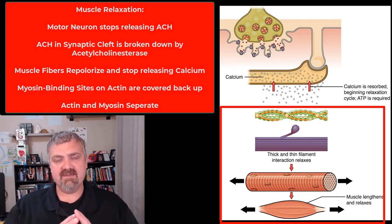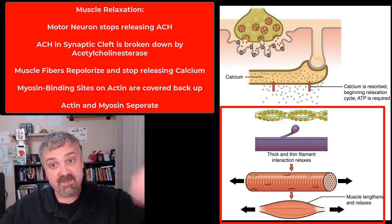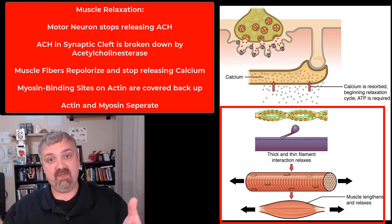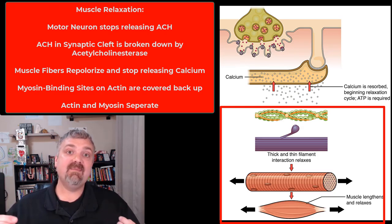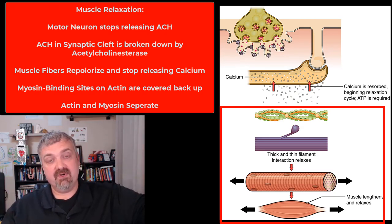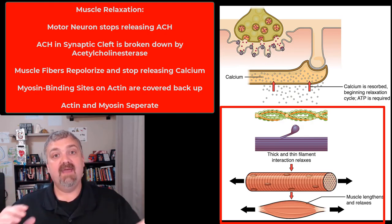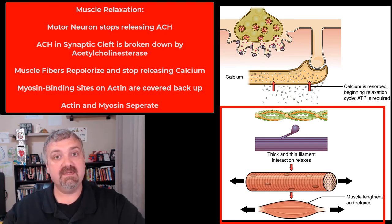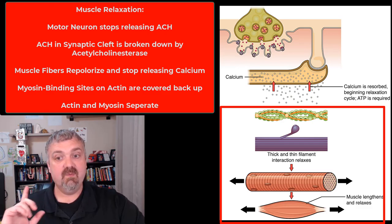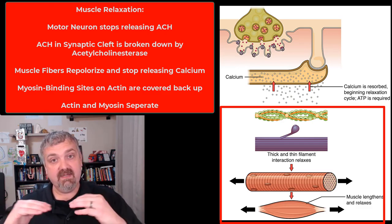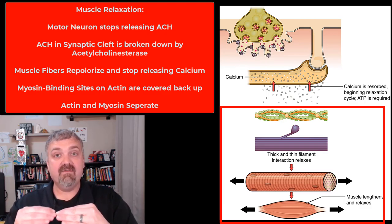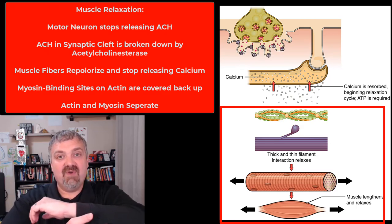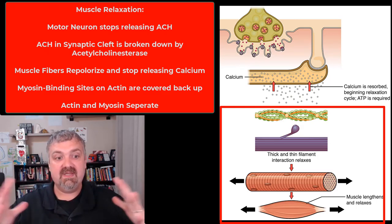How does the muscle stop contracting — how does muscle relaxation occur? The signal from the nervous system disappears, starting this process. The acetylcholine in the synapse will either be reabsorbed by the neuron or broken down by an enzyme called acetylcholinesterase. With the motor neuron signal stopped and acetylcholine removed, the muscle fiber will repolarize and turn off. Calcium is then reabsorbed back into the sarcoplasmic reticulum. Without calcium, it comes off troponin, and troponin and tropomyosin go back to cover the myosin binding site on actin — reshielding it. Now myosin can no longer grab onto actin, causing your muscles to relax and lengthen.